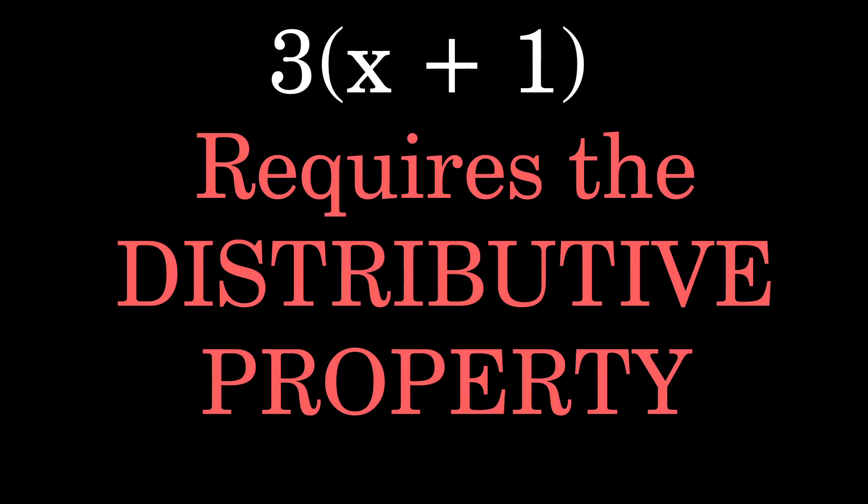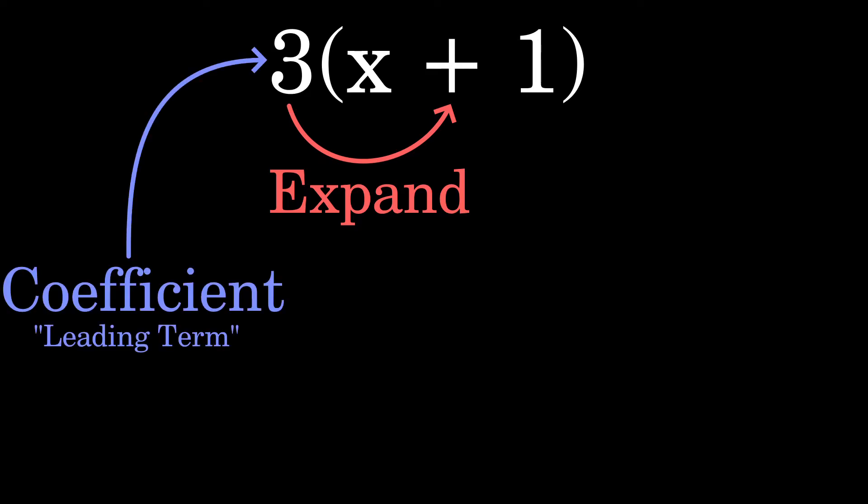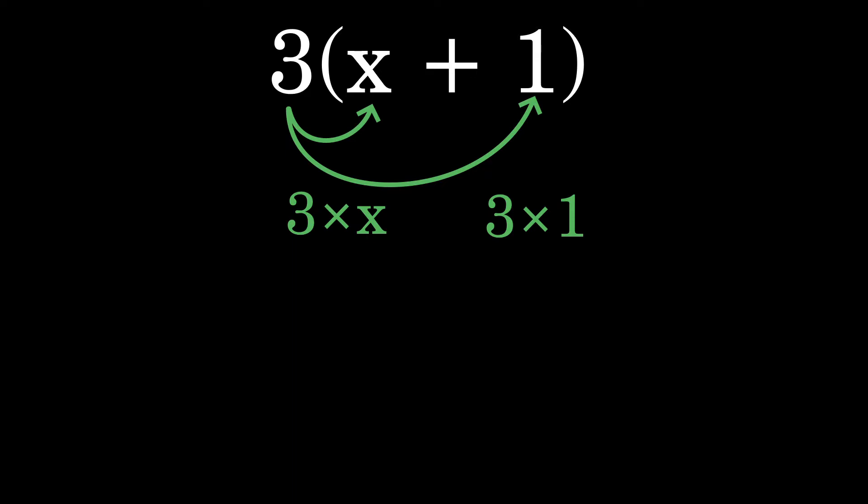Now that we have an understanding of group multiplication, let's take an expression and apply the distributive property. The expression three times the group of x plus one is a situation where we are required to use the distributive property to expand this expression into terms that we can actually use. The leading term is also known as the coefficient,